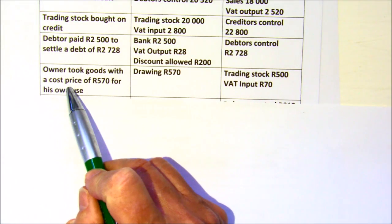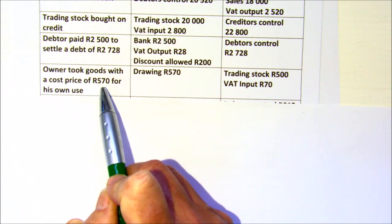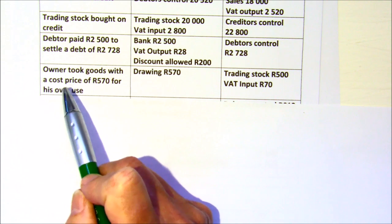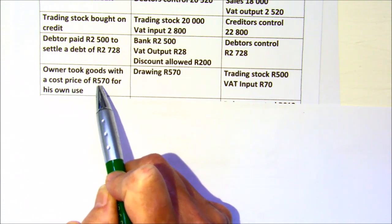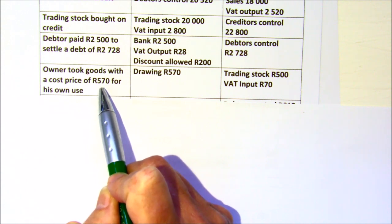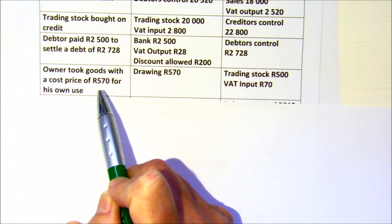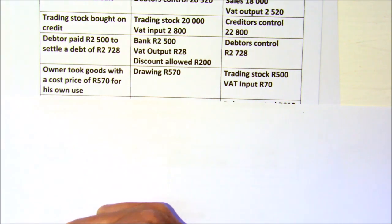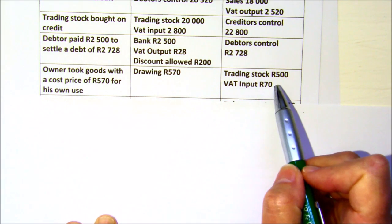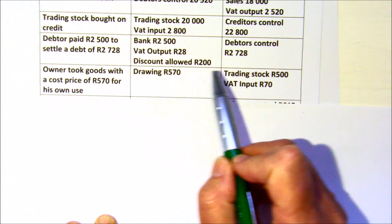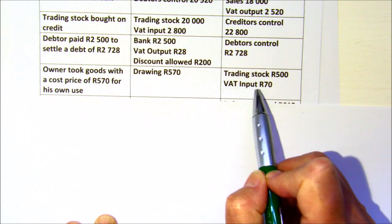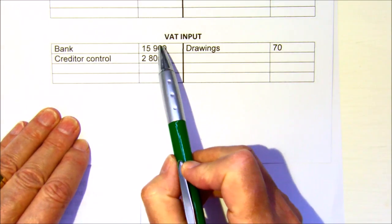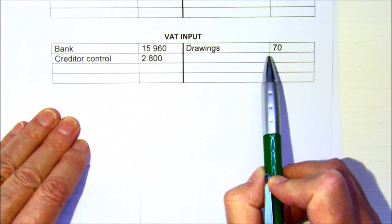If an owner takes goods with a cost price of 570 for personal use, that's drawings and trading stock. When you bought those goods you treated them as trading stock and VAT input, claiming back the VAT. But the business entity rule applies — you cannot claim VAT back on goods for the personal use of the owner. So if you claimed it back, you now owe it to SARS. Your drawings show the full amount, trading stock is always the exclusive amount, and you reduce the VAT input claimable by 70 rand.